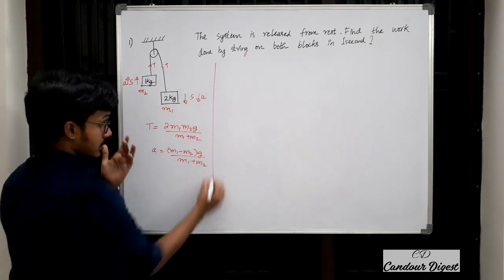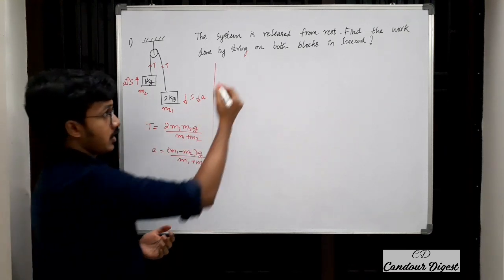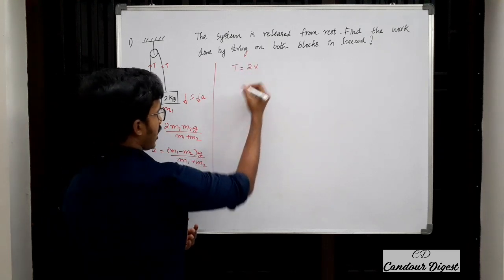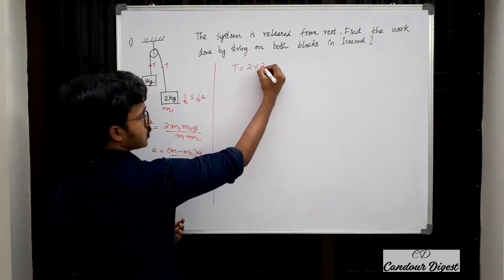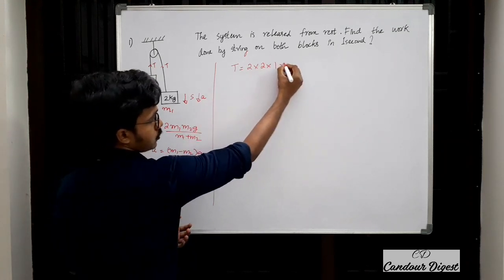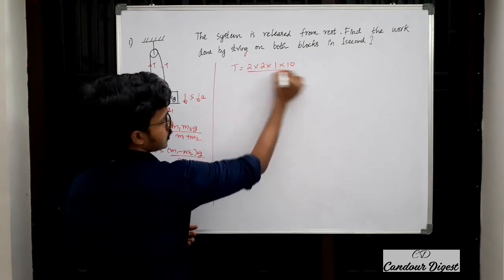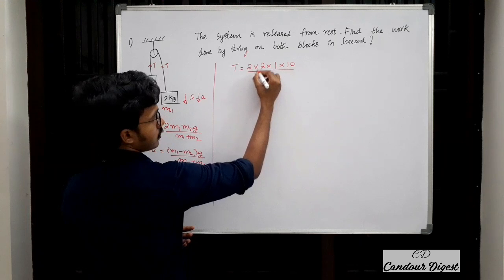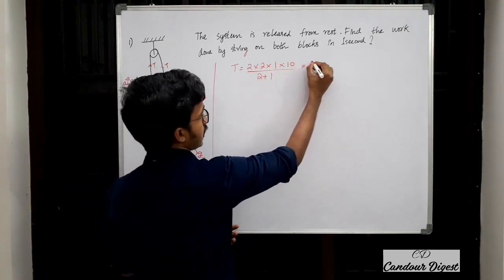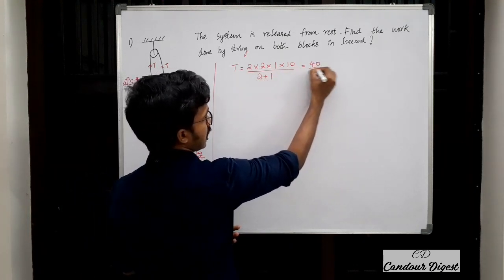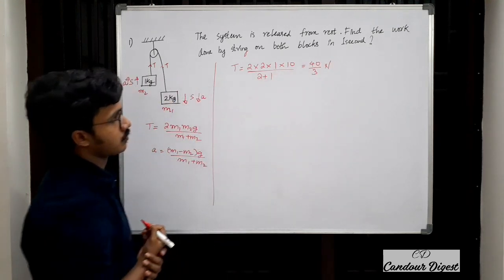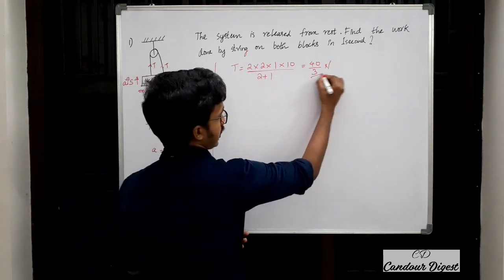Let us calculate tension. T = 2 × 2 × 1 × 10 / (2 + 1) = 40/3 Newtons. So we have obtained the tension.